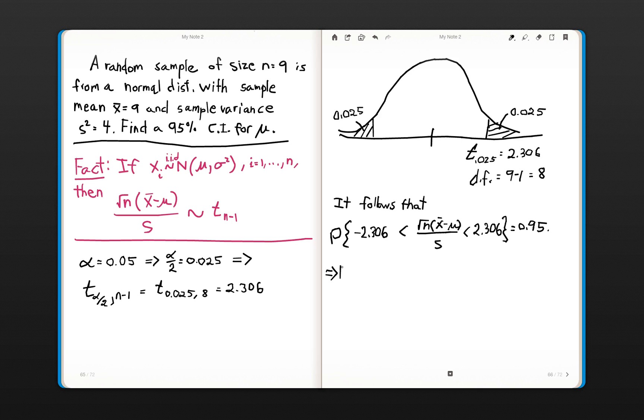If you do a little bit of algebra, then this is the same as saying the probability that mu, the population mean, is between x bar minus 2.306 times s divided by square root of n, and x bar plus 2.306 s divided by square root of n is actually equal to 0.95.